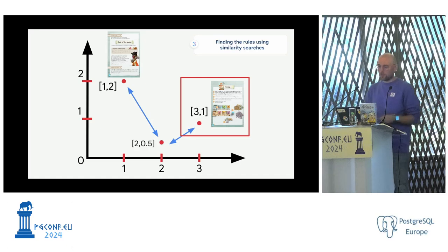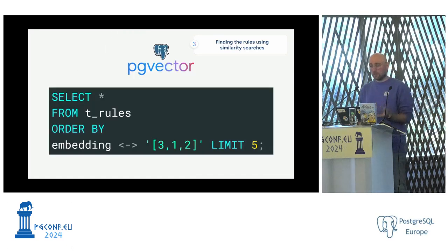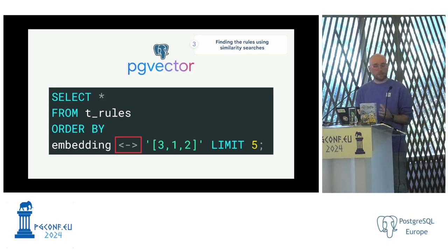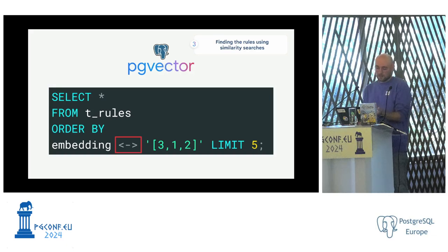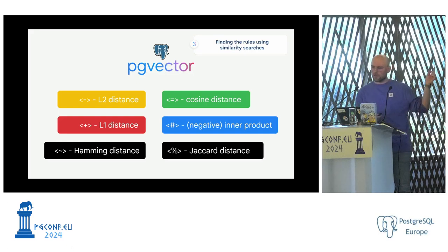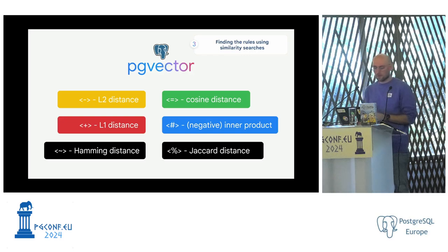On pg_vector you have access to new operators for distance calculation. I'm using the L2 distance operator to calculate the distance between the embedding column and an input, keeping the five best results — the five with the closest distance. pg_vector actually provides six different distance operators since version 0.7. The two original ones — L2 and cosine distance — have been joined by four new operators. Depending on the use case, data, and embedding model, you'll prefer one method over another.